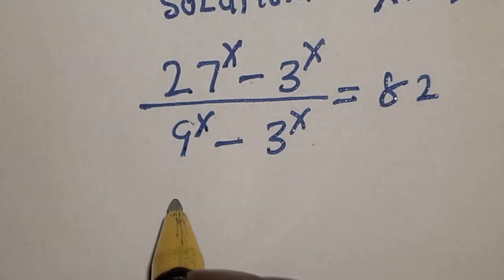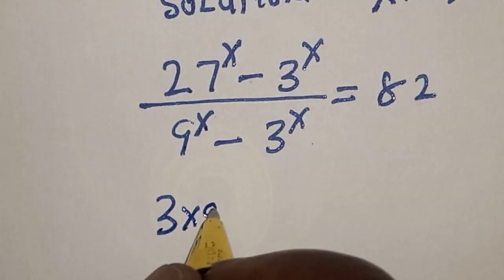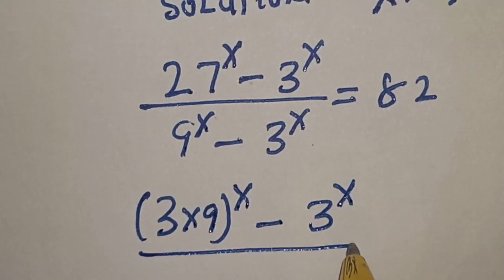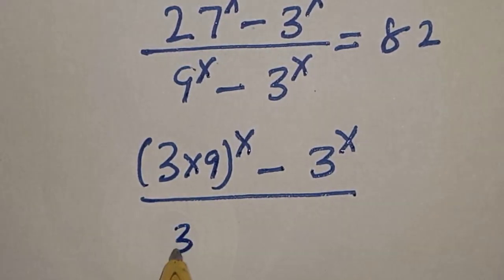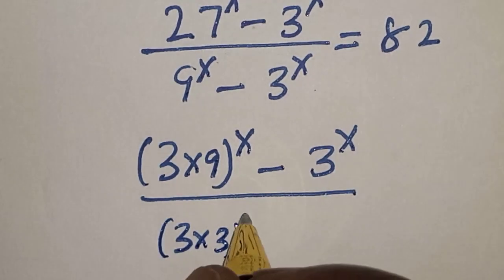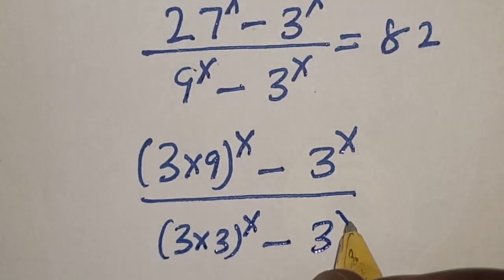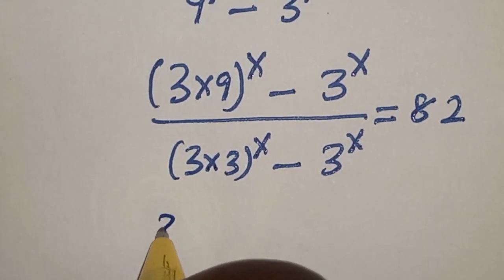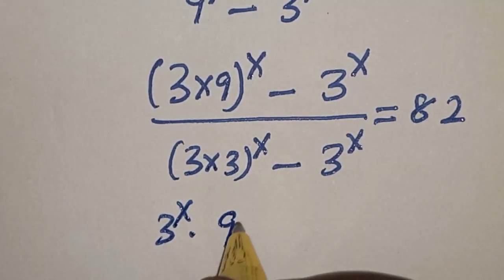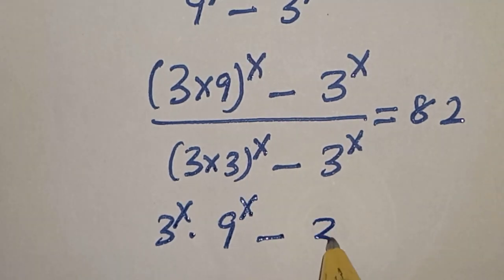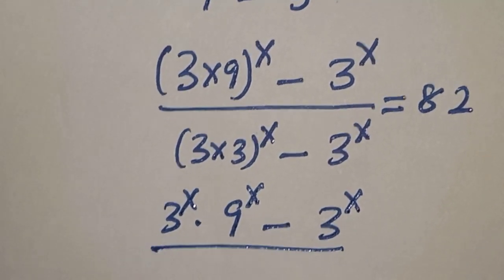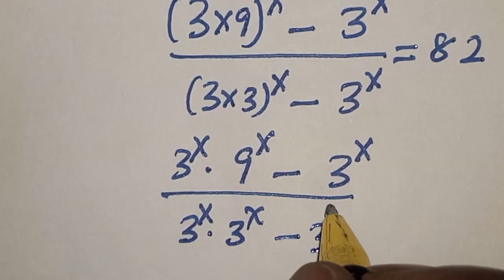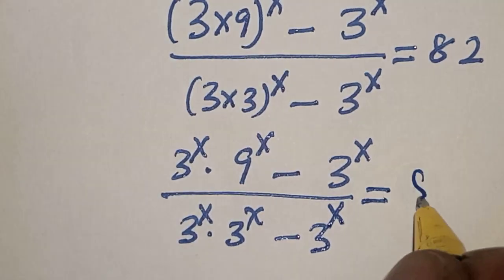27 raised to power s is the same thing as 3 multiplied by 9 raised to power s. So we have: 3 multiplied by 9 raised to power s minus 3 raised to power s, divided by 9 raised to power s minus 3 raised to power s, is equal to 82.